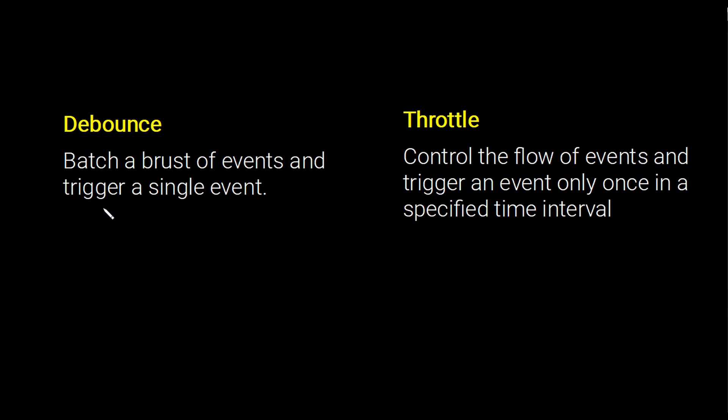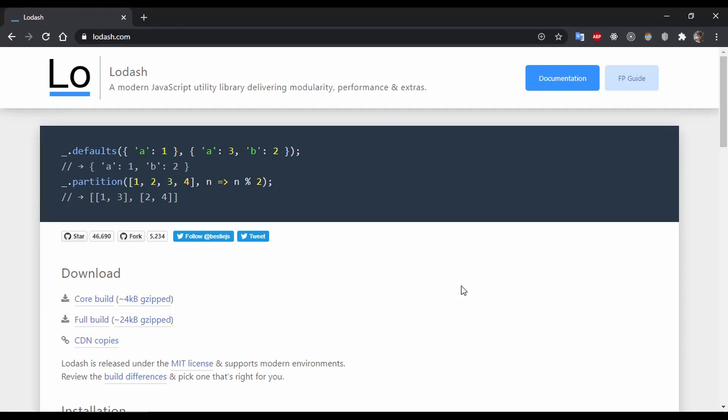The definition of debounce is that it should batch a burst of events and trigger a single event. What that means is if multiple events are coming one after another, the debounce function is going to stop those events and execute only one event after the events stop coming. Throttling is very simple — it is just controlling the flow of events. If multiple events are coming, only one event is allowed per time interval.